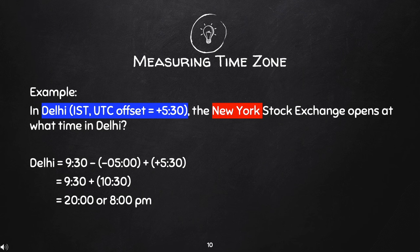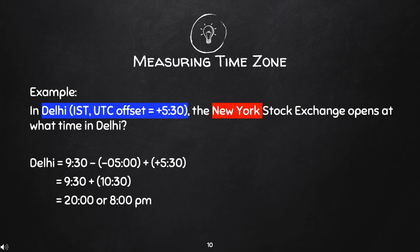Look at the problem again. Highlighted in blue is Delhi, which is plus 5:30, and New York, which is negative 5. The formula is: Delhi equals 9:30 minus (negative 5 UTC offset) plus (5:30 UTC offset). Since we are moving towards the right, we add the UTC offsets: 5 plus 5:30 is 10:30. So, 9:30 plus 10:30 equals 20, which is standard time. Converting it, it becomes 8 p.m. Therefore, when the New York Stock Exchange opens at 9:30 in the morning, it is already 8 p.m. in New Delhi, India.